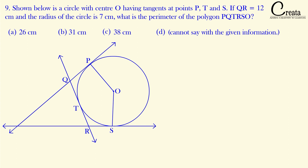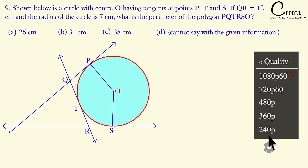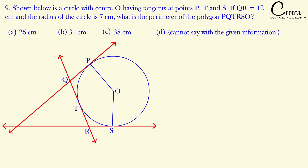Let's move to question number nine. Pause the video and try to solve this question — this will be really helpful. In this question, a circle is given with center O and three tangents are given. These three tangents touch the circle at points P, T, and S. A tangent is a line segment which touches the circle at only one point.